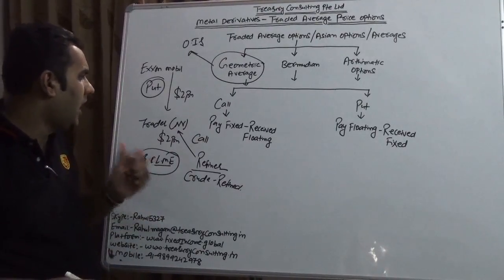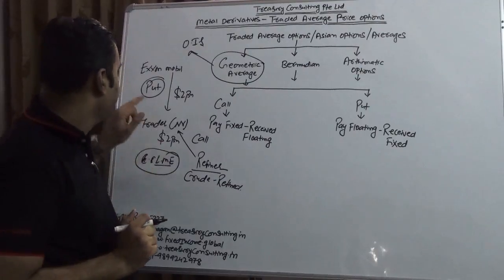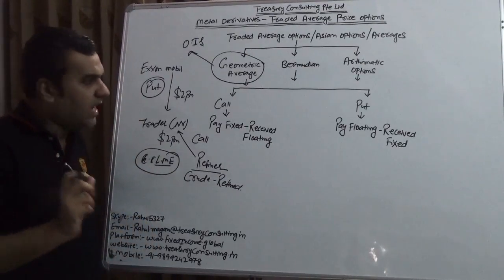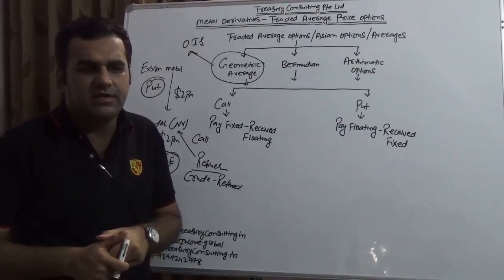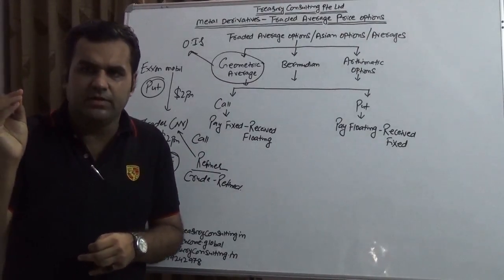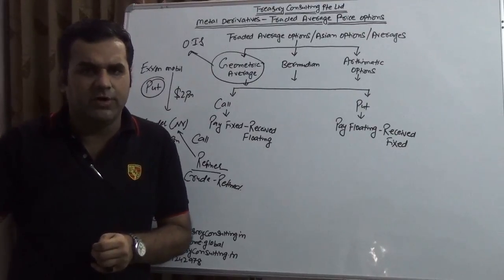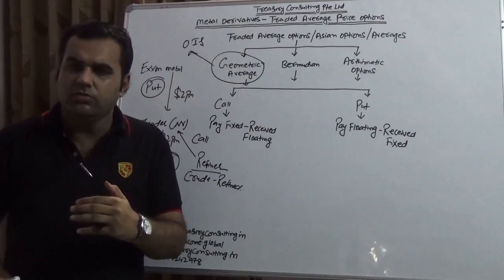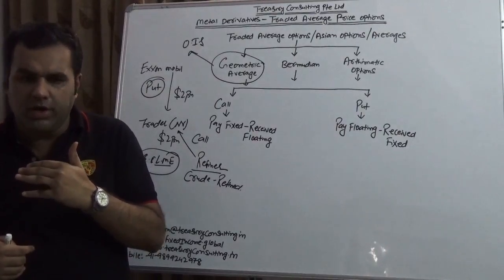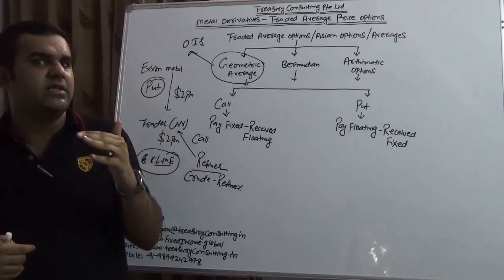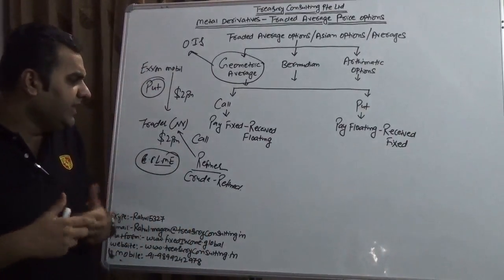ExxonMobil will go for put. I'm not talking Bermudian right now, assuming both have different ways of looking at it. ExxonMobil thinks that price would rise a little bit and then fall, so it is better for me to lock right now so that I'm able to sell at a higher price. The refiner is having a different view. He thinks that price would go slow and it would hike after a point of time, so basically the price would get down. It is better that I should buy.